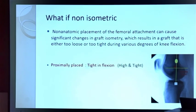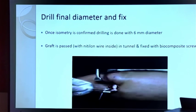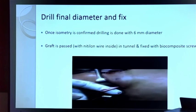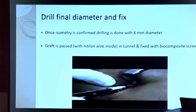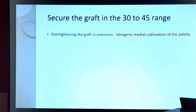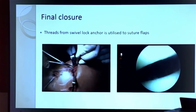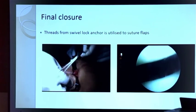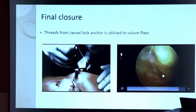If you are non-isometric: if the point is too high, the graft will be tight in flexion; if too low, it will be loose in flexion; if too anterior, it will be loose in extension. Graft malpositioning affects knee kinematics. Once isometry is confirmed, drill the final diameter and pass the graft into the tunnel, fixing the femoral point with a bioabsorbable screw. Secure the graft at 30–45 degrees of range of motion. Overtightening in extension leads to medial subluxation; overtightening in flexion causes loss of flexion. This is the final closure of the retinaculum after MPFL reconstruction.